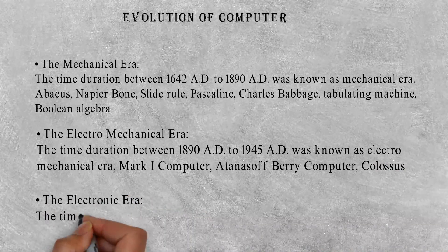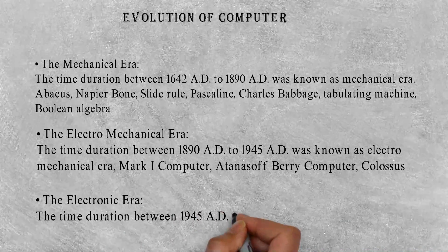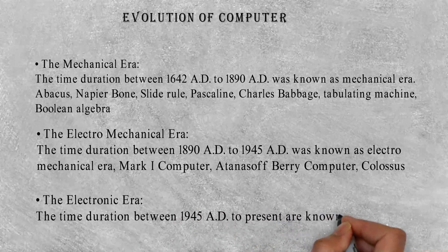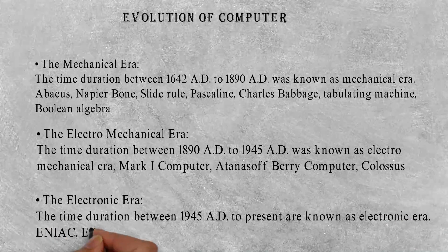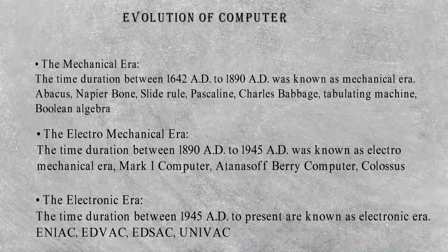The Electronic Era: The time duration between 1945 AD to present is known as Electronic Era. Examples include ENIAC, EDVAC, EDSAC, and UNIVAC.